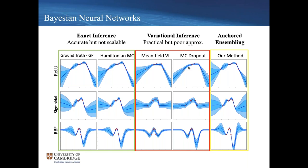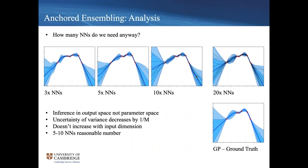On the left we have ground truth methods that are really accurate but don't scale up to big problems. The red box shows common practical methods that are scalable approximations — practical but not always a great reflection of the ground truth. The point is we're trying to show that our anchored ensembling method gives a practical approach that does provide a good reflection of the ground truth.